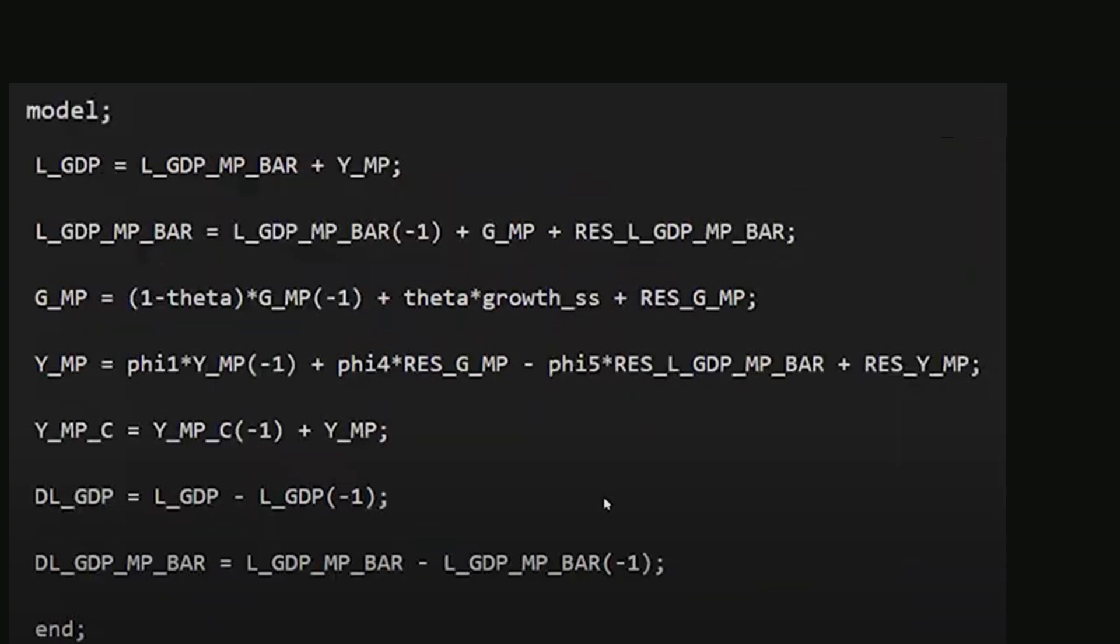We move on to the model block where equations are defined. This block starts with the keyword model and ends with end, both followed by semicolons. The first equation defines the output gap as the difference between real GDP in log terms and its trend. Alternatively, GDP is expressed as the sum of its trend and gap.